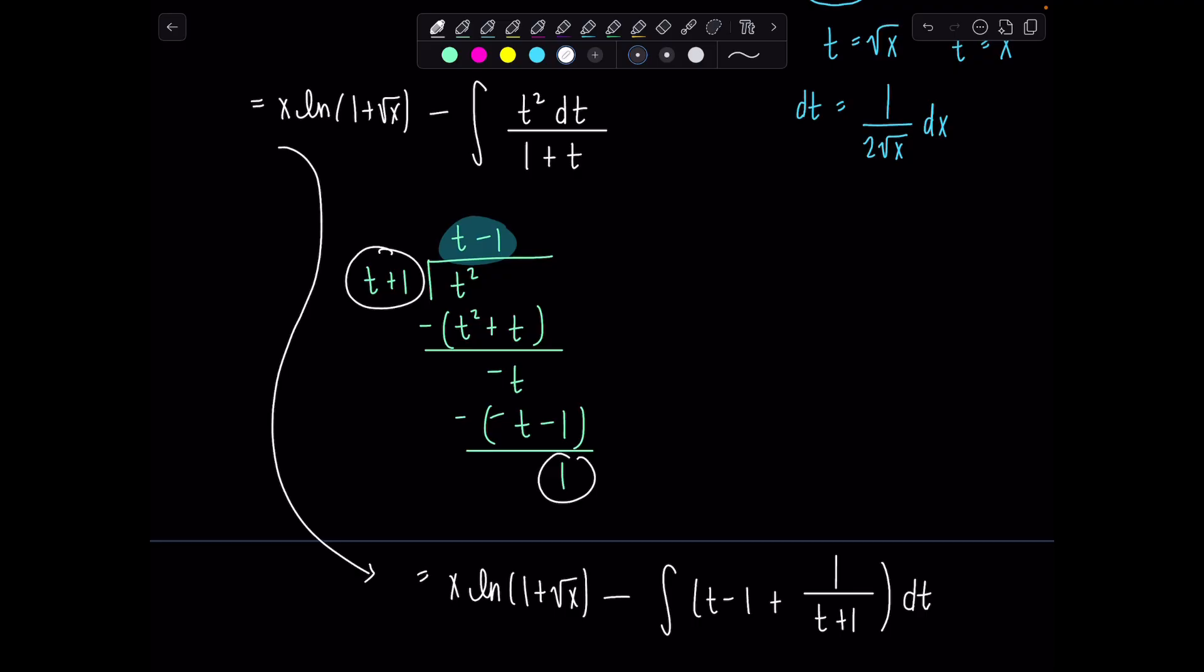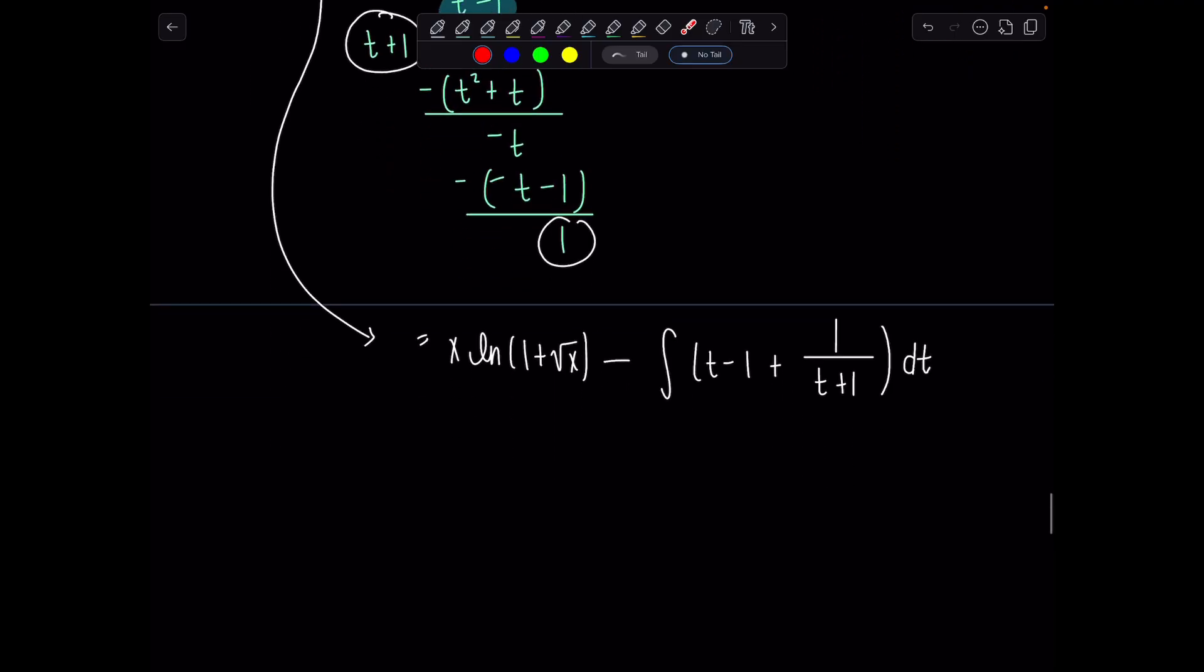Okay, each of these we can integrate, no problem. And then from there we'll just back sub and replace t with rad x. You got it. So x ln(1 plus rad x) minus, we'll have 1 half t squared plus t minus ln absolute value t plus 1 plus c.